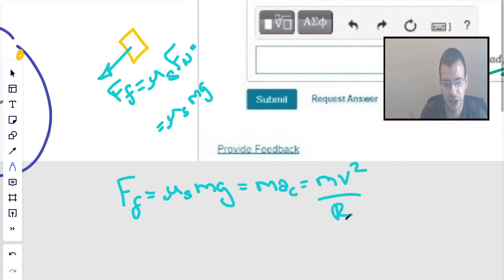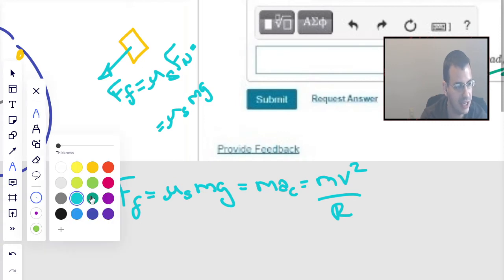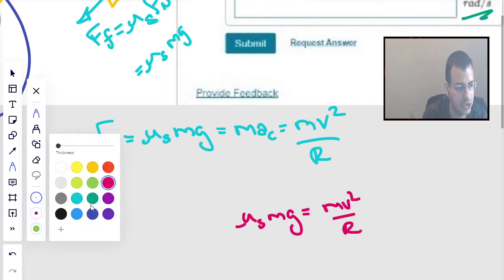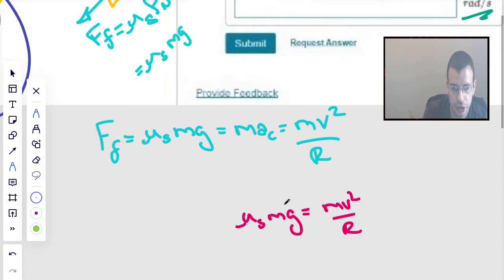So we have mv² over r. Conveniently, the mass is irrelevant. So I'm going to rewrite this: coefficient static friction mg equals mv² over r. Looks like the mass is irrelevant. We'll see. So mass cancels.